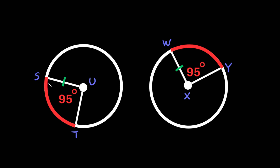Here's the next example. We want to check if these red arcs are congruent, and this time we have two separate circles. We still just check two things: that they have the same central angle — and they do, both are 95 degrees — and the same radius. We can tell they have the same radius because there are congruent marks on each radius, telling us those radii are equal. So since we have the same angle and the same radius, arcs ST and WY are congruent to each other.